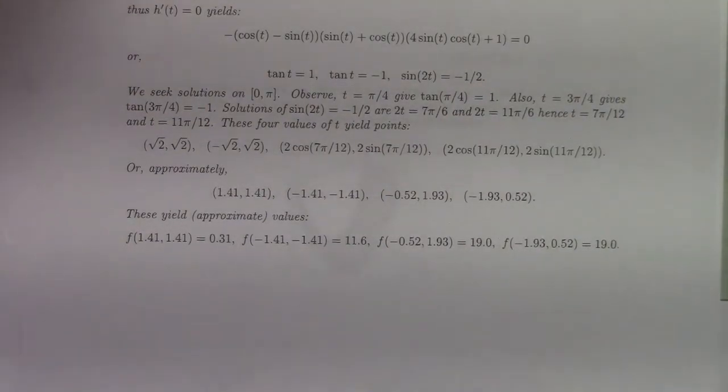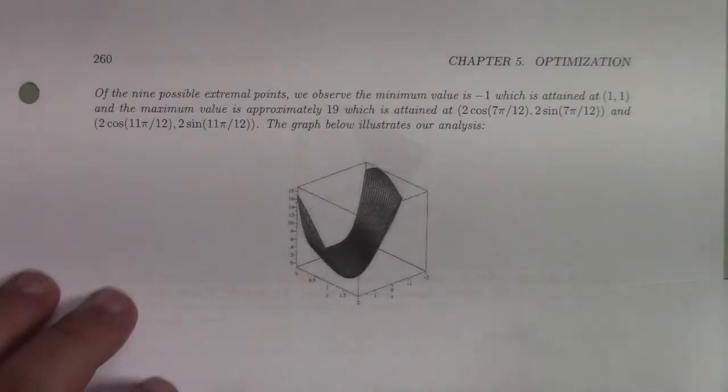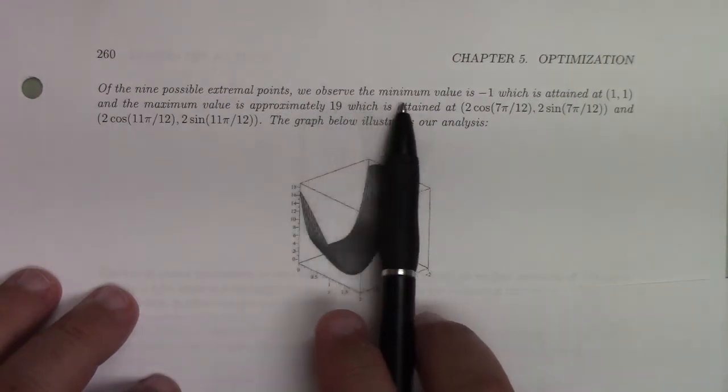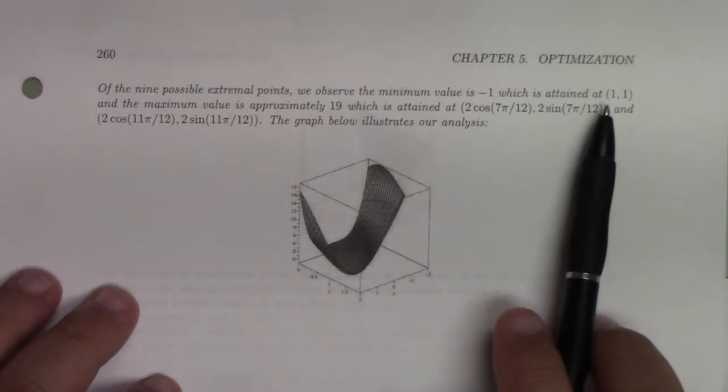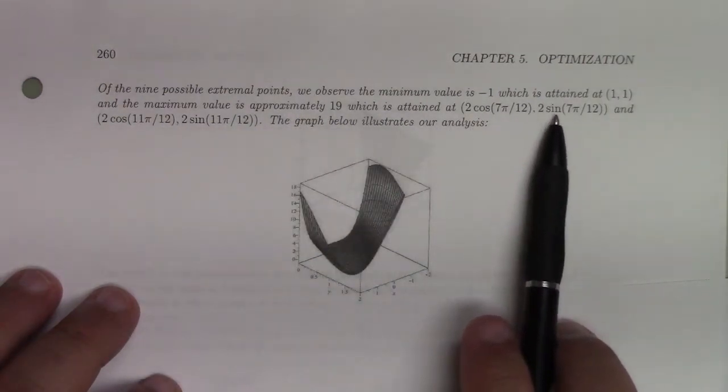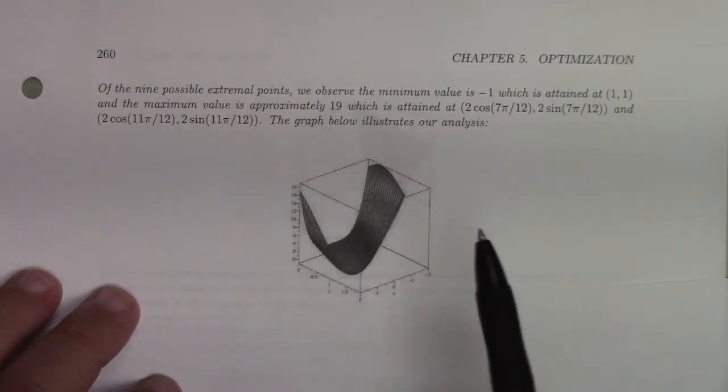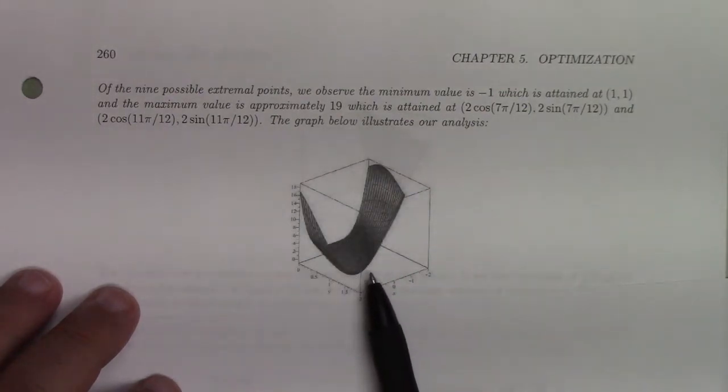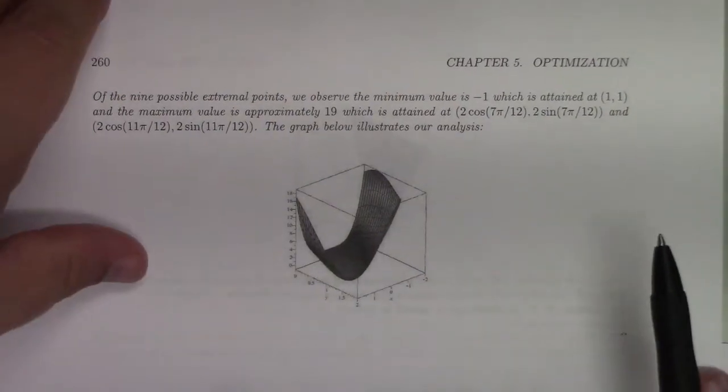At this point, we can look at everything together and say of the 9 possible extremal points, we observed the minimum value is minus 1, which was attained at (1,1). That critical point we found to start with actually matters—it gave us the minimum value. And the maximum value of 19 is attained at these two points. Here's the graph, which is actually a graph of the function over the half disc.